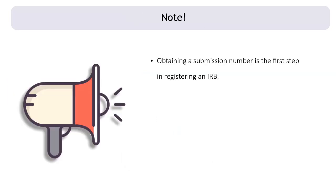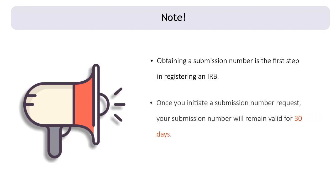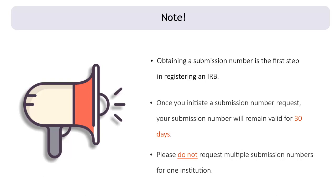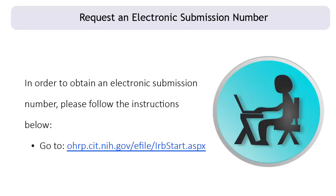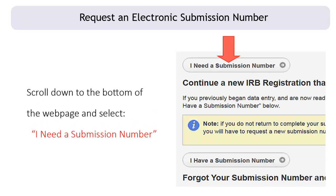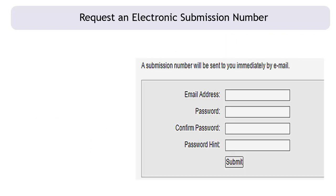Obtaining a submission number is the first step in registering an IRB. Once you initiate a submission number request, your submission number will remain valid for 30 days. Please do not request multiple submission numbers for one institution. In order to obtain an electronic submission number, go to ohrp.cit.nih.gov/efile/irbstart.aspx. Then scroll down to the bottom of the webpage and select 'I need a submission number.' A new page will open.